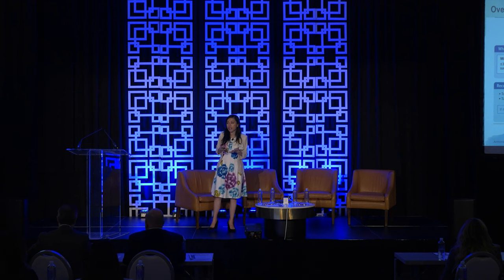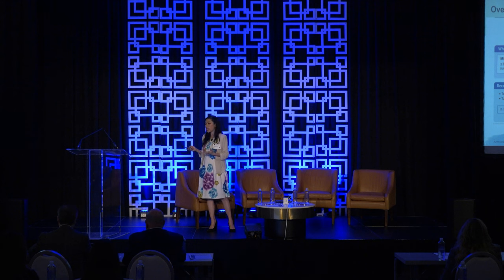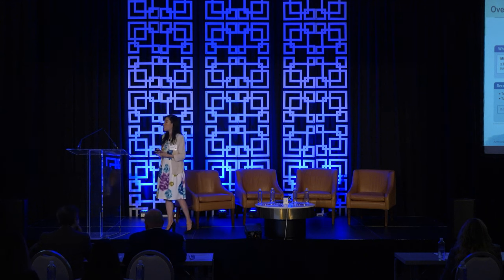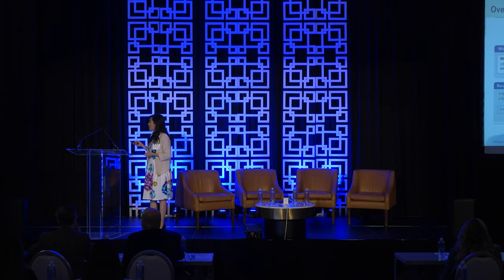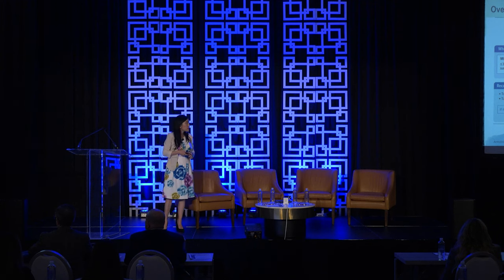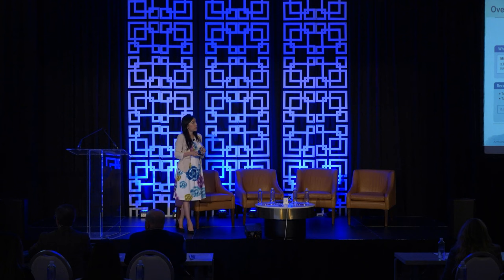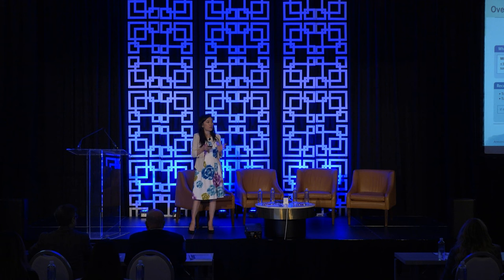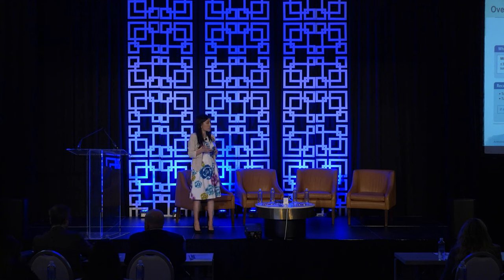If their psoriasis is more moderate to severe — and this definition has been debated over many years — nowadays we think probably greater than 5% of body surface area, or special areas involved such as the scalp, intertriginous areas, or palms and soles. Most payers, however, typically define body surface area still as 10% or greater. If you decide the patient has moderate to severe psoriasis, then you want to go to one of the systemic therapies.